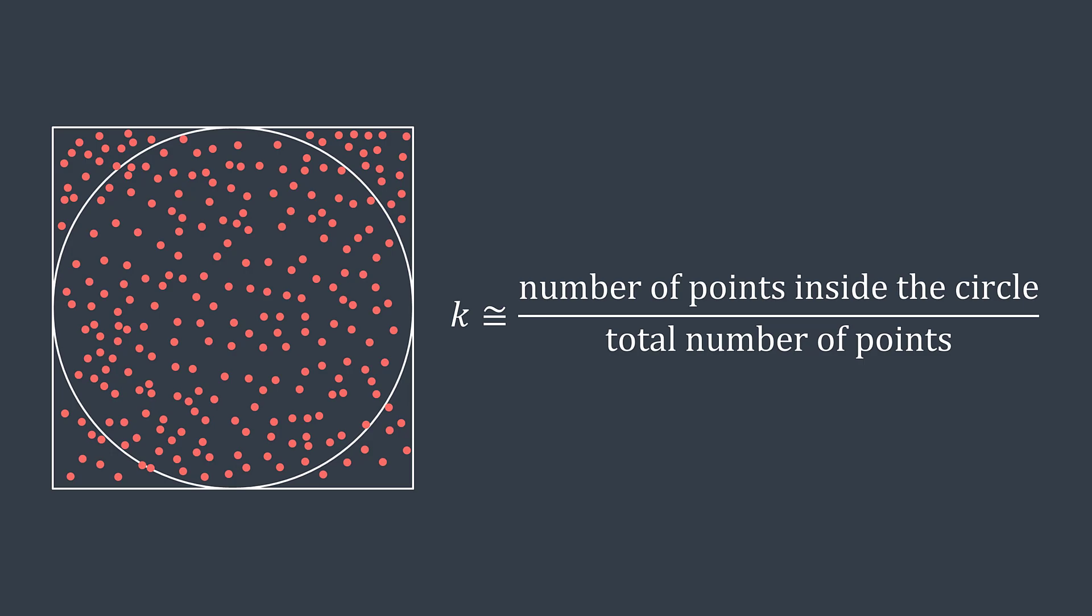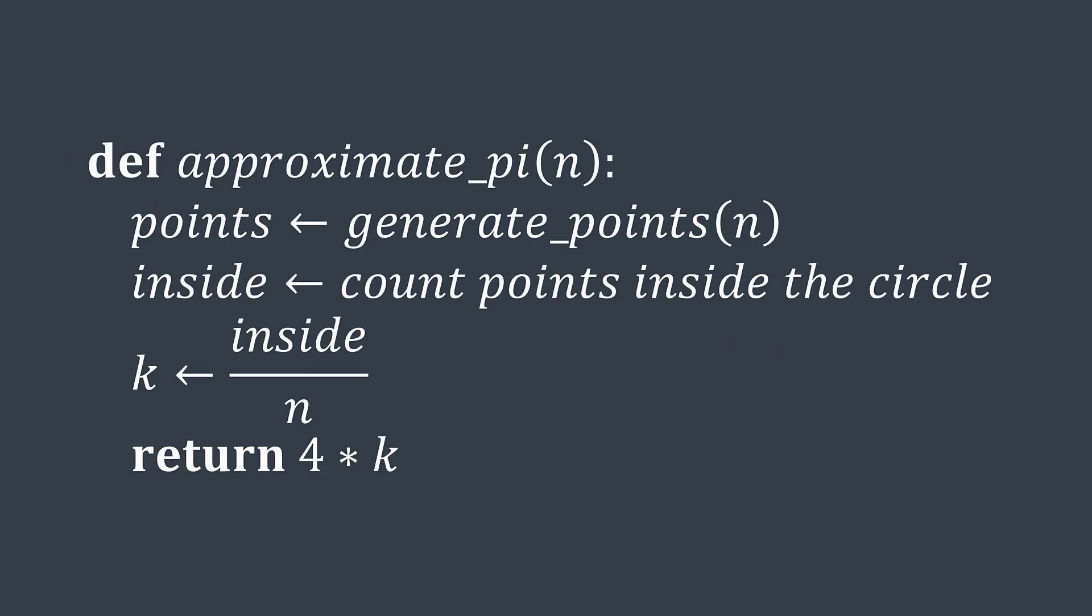And thus the idea of our algorithm: generate a bunch of points, count how many are inside the circle, calculate K, the ratio, and multiply it by four to get Pi.